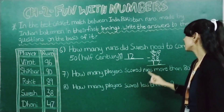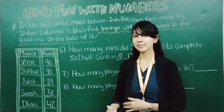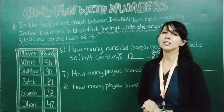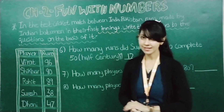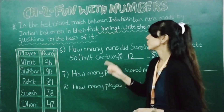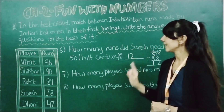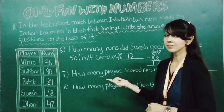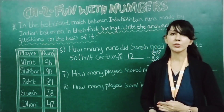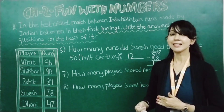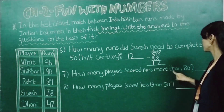Now moving to the next question: how many players scored runs more than 80? According to this information, Virat has scored 96 runs — more than 80. Shikhar has scored 90 runs — more than 80. Rohit has scored 89 runs — more than 80. Suresh and Dhoni have scored less than 80. So 3 players scored runs more than 80.